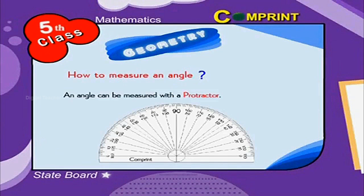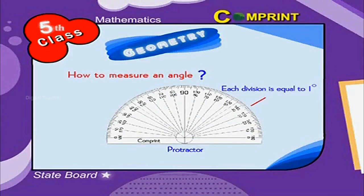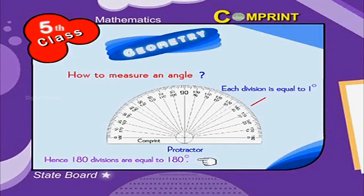An angle can be measured with a protractor. Look at the picture of protractor. It consists of 180 degree equal divisions. Each division is equal to 1 degree. Hence 180 divisions are equal to 180 degrees.